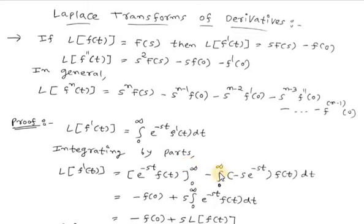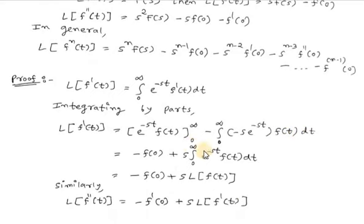Then, minus the integration from 0 to infinity of the derivative of e^(-st), which is -s·e^(-st), multiplied by f(t) dt. For the upper limit infinity, e^(-infinity) equals 0, and since f(t) is defined for all t ≥ 0 it is a finite value; so finite times 0 equals 0.